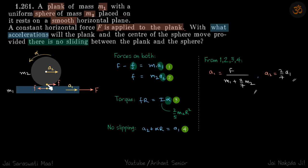So this point on the sphere will accelerate by a2 plus alpha r, and this point on the plank will accelerate with a1. So a2 plus alpha r equals a1.